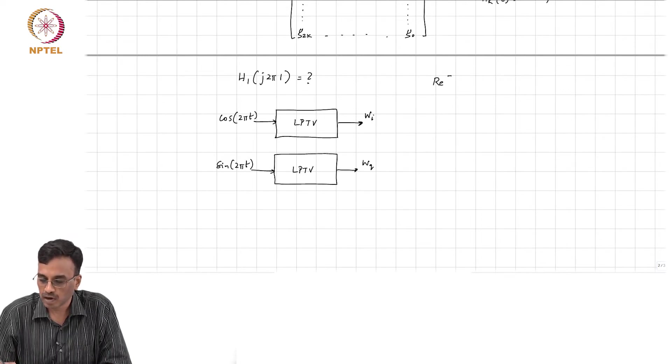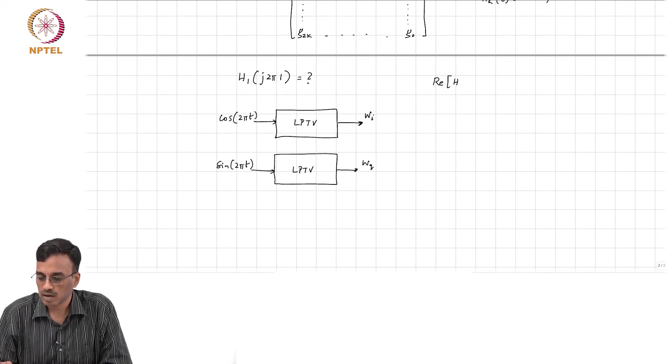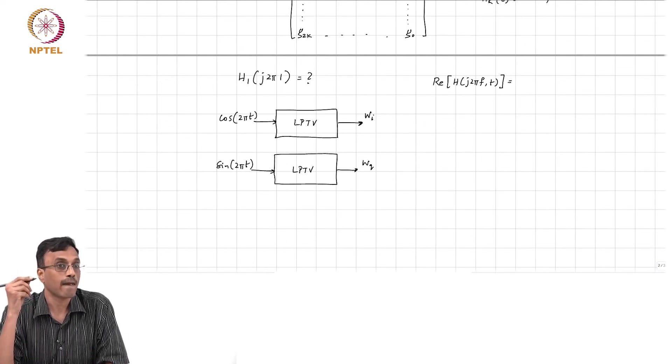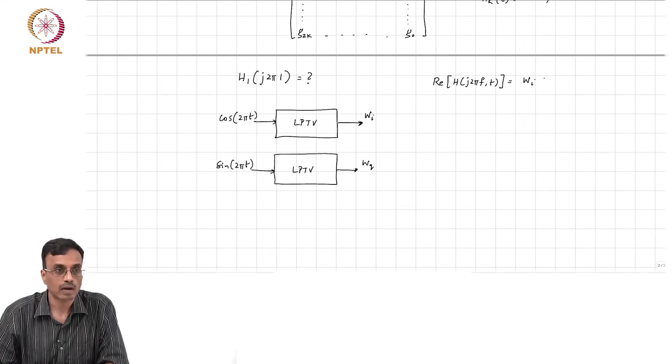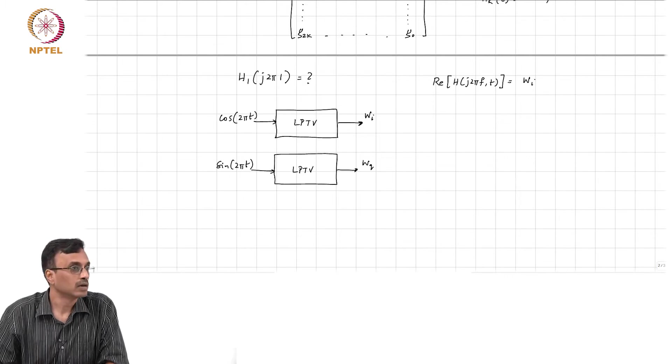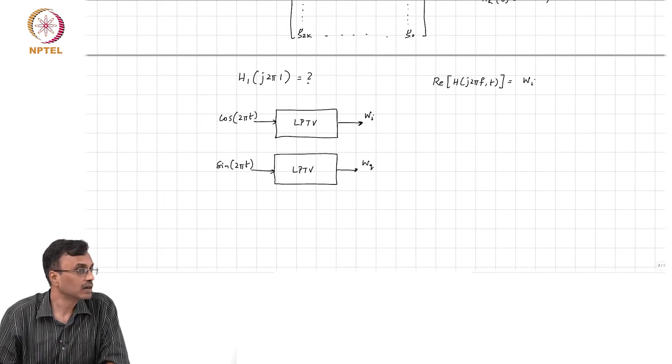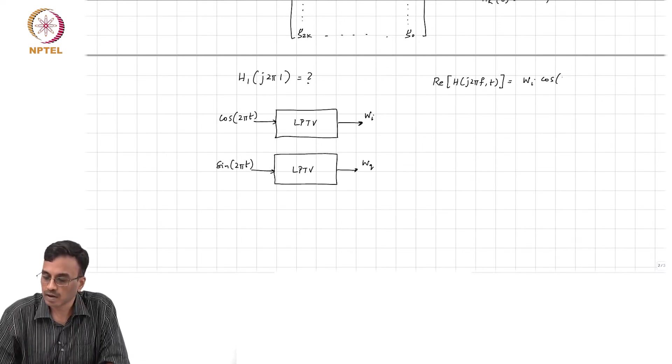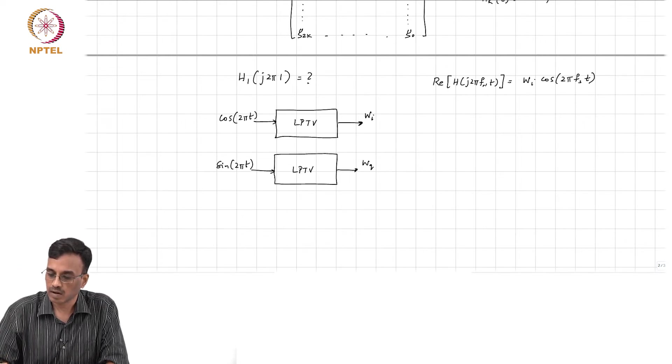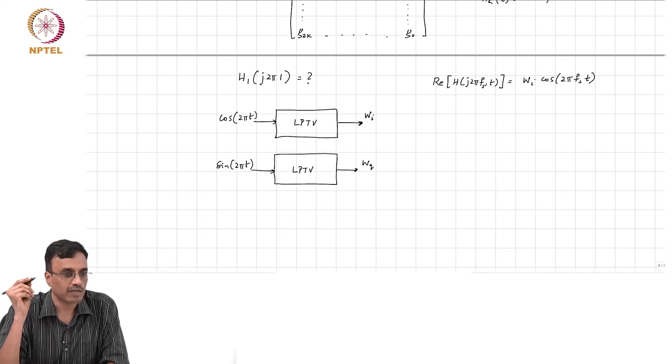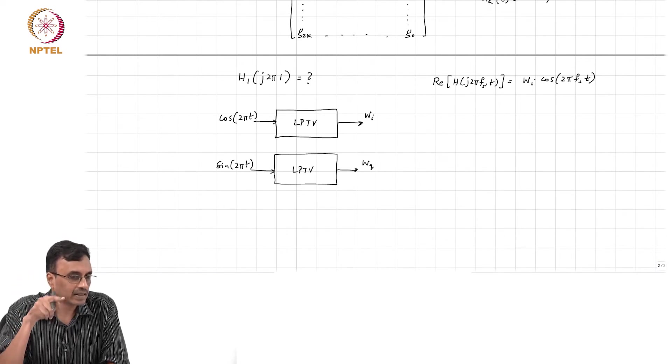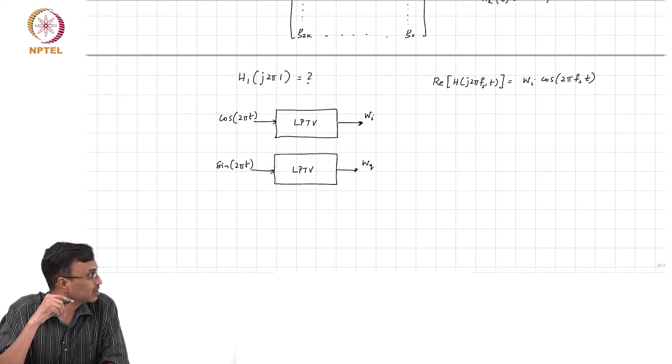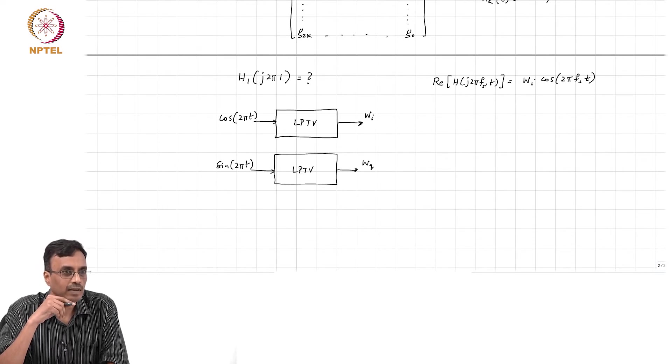And what is the real part of H of j2πf comma t? This is nothing but wᵢ times real part of H, which is wᵢ times cos 2πfₛt. I have 2πfₛ times t because in this case I am exciting the system with an input at fₛ. Does it make sense?